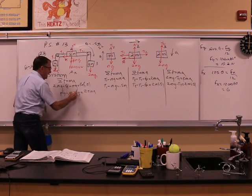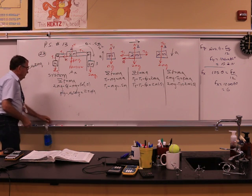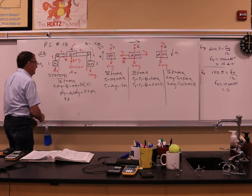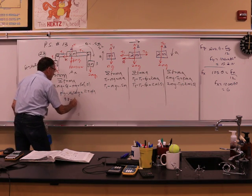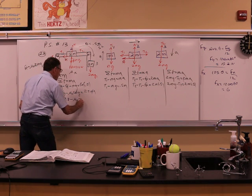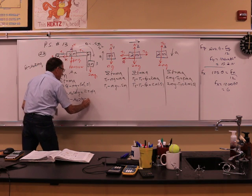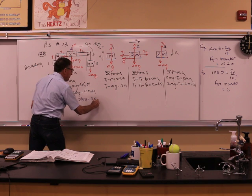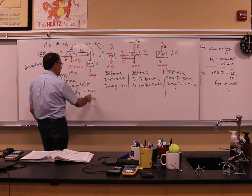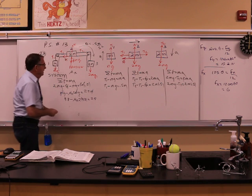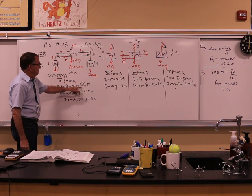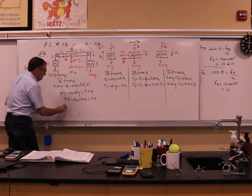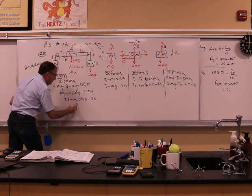So you really have 9.8 minus mu k times 2 times 9.8 equal to 2.5. 2.5. Because this is 0.5 times 0.5 is 2.5. So it's 2.5. And just go through now and solve for mu k.